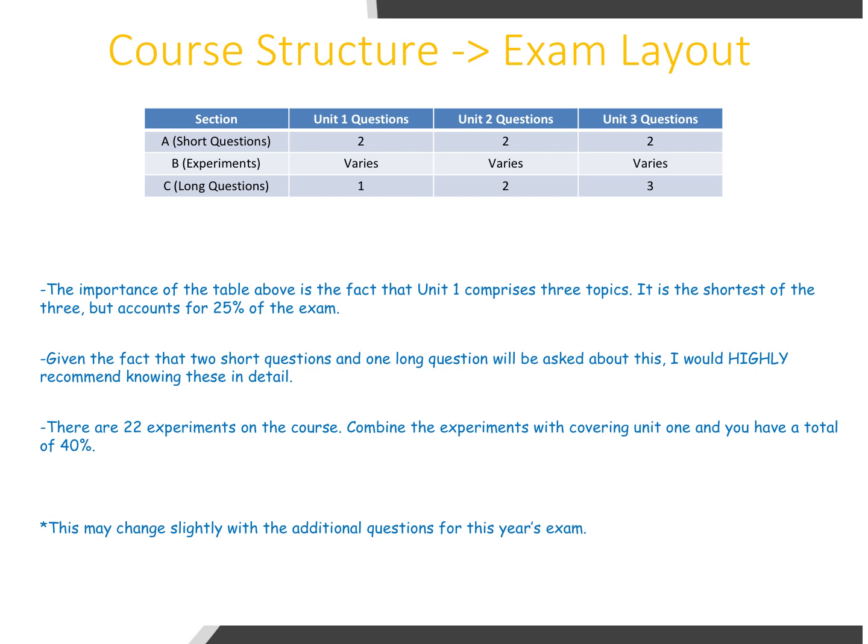The importance here is that Unit 1 comprises just three topics — food, scientific method, and ecology. It's the shortest of the three, but given that you'll be able to answer two short questions and a long question totaling 100 marks on just those three topics, they account for 25% of the exam. So even if you just know those three inside out, that's 25% of your final exam. There are about 22–23 experiments in the course. If you combine the experiments with covering Unit 1, you have a total of 40% — just from knowing those three topics and your experiment questions, you'd have passed the exam.